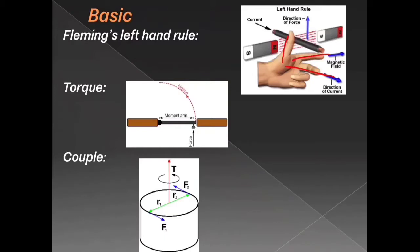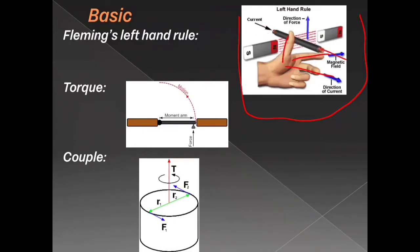Here you can see the picture illustrating Fleming's Left Hand Rule. The magnetic field passes from north to south, so the forefinger indicates the magnetic field. The direction of the force is applied upward. If the current passes in the other direction, the direction of the force will be downward.